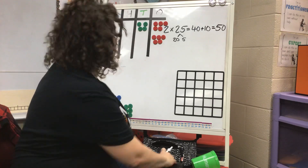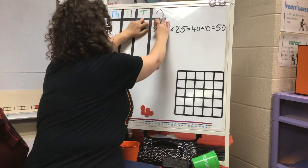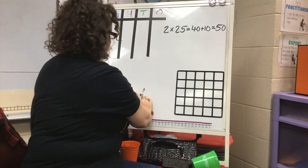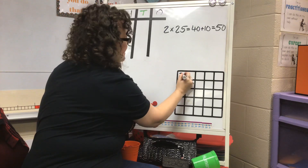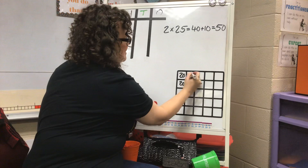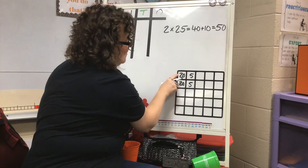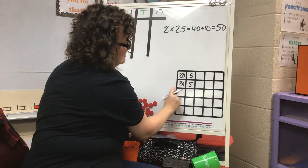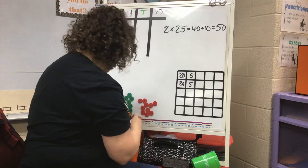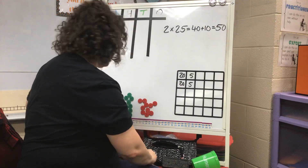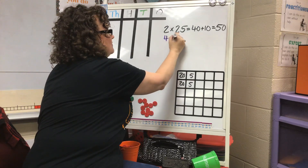Let's try another one. Let me erase my work — we're going to leave that one up there. I'm going to record what I did with 2 times 25 another way: I did two 20s, I did two 5s, and I said that my final answer was 50. So my 20 and my 5s were split up, and all together I know that that's 50.